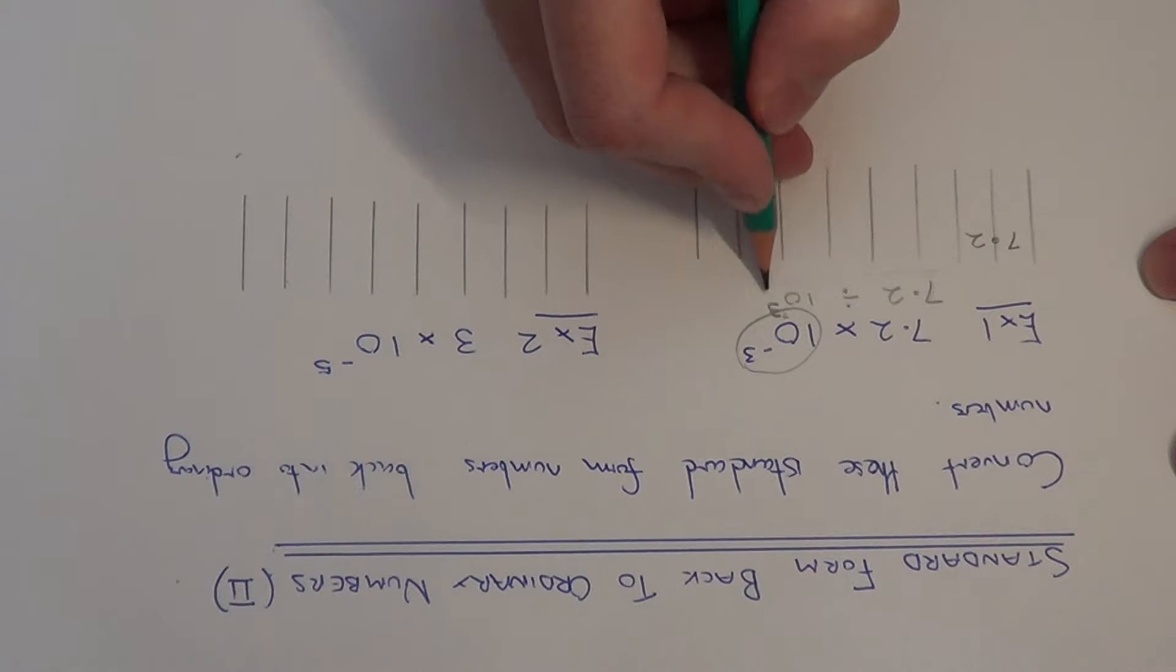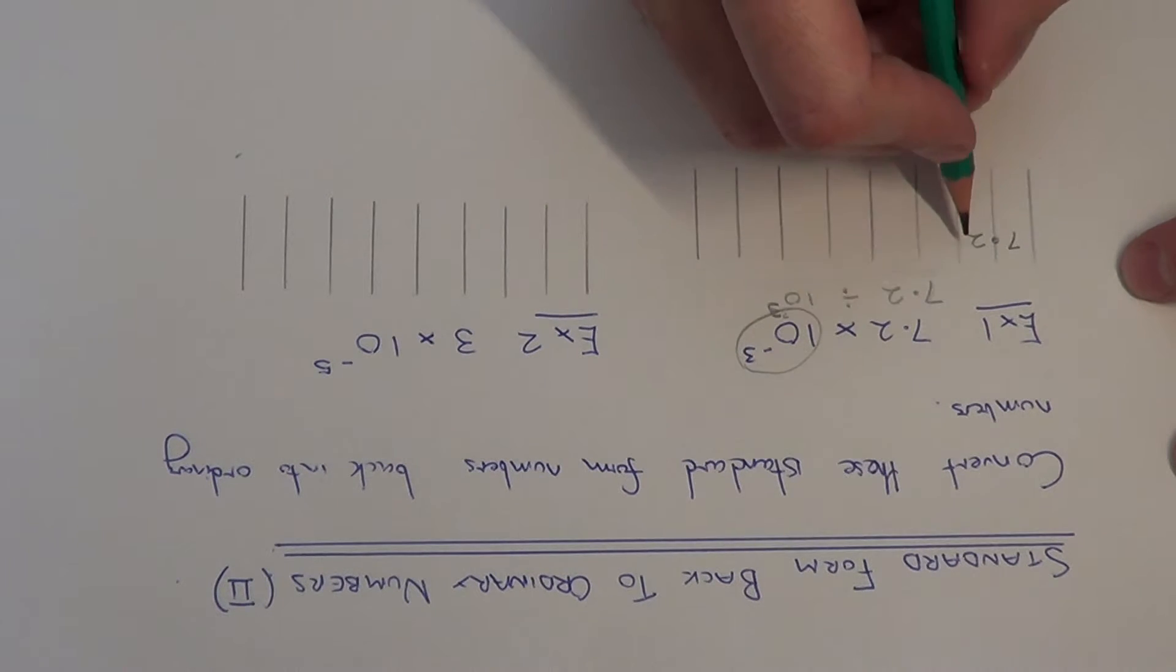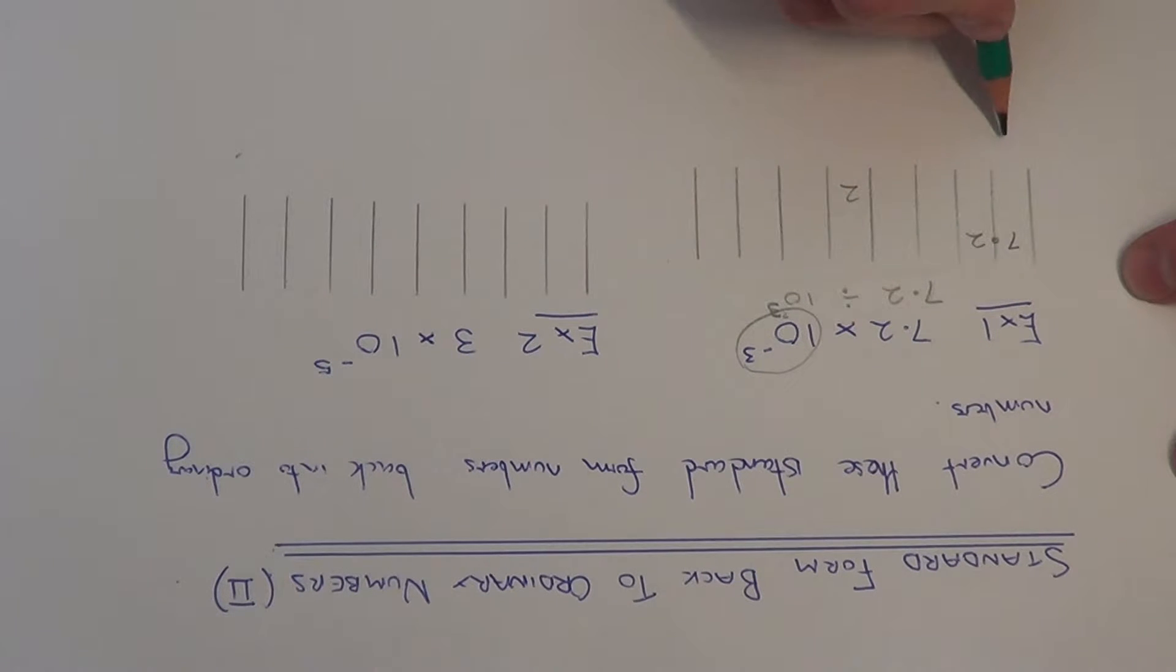what we have to do is move the digits 3 places to the right. So the 2 will go 1, 2, 3. Drop it in that column.